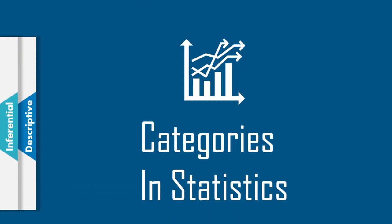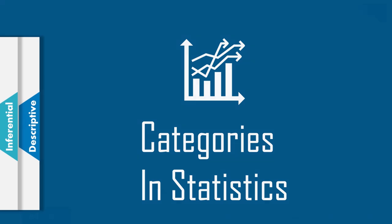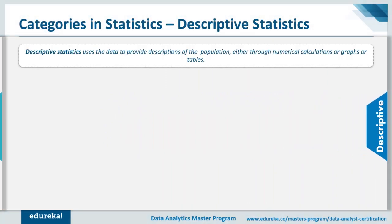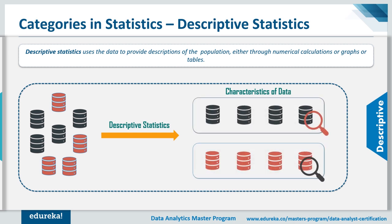Statistical analysis has two categories: descriptive statistics and inferential statistics. Descriptive statistics uses data to provide descriptions of a population either through numerical calculations, graphs, or tables. It helps organize data and focuses on characteristics of data, providing parameters. For example, if you want to study the average height of students in a classroom, you would record all heights and find the maximum, minimum, and average height.